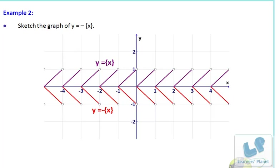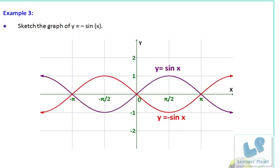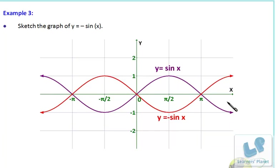Here I have the graph of sin(x) — this purple line. If I have to draw the graph of -sin(x), I have to invert this graph along the x-axis. Consider the x-axis as a mirror and invert this graph — or you can say this is the water image.